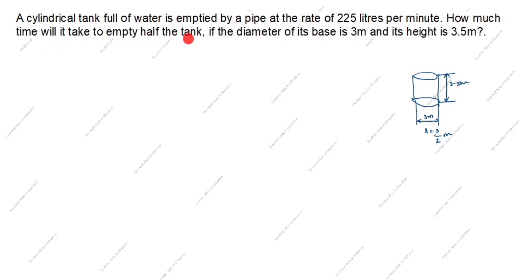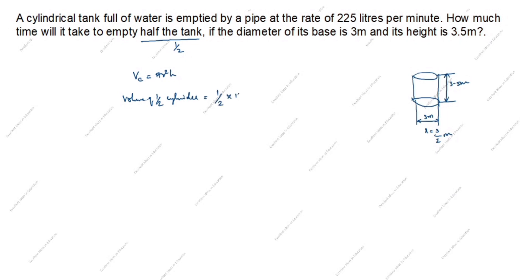It's not the full tank — half the tank. So we will take half. What is the volume of a cylinder? The formula: volume of cylinder equals pi r squared h. But what we need to find is half the tank, so volume of half the cylinder. The formula is one-half into pi r squared h.